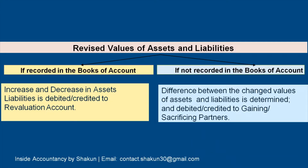When revised values are recorded in the books of accounts, any increase or decrease in assets and liabilities is either debited or credited to the revaluation account, and the gain or profit is transferred to partners' capital account. When revised values are not to be recorded, the difference between the changed values is determined by preparing a statement showing adjustment, and the net effect is debited or credited to the gaining or sacrificing partners via an adjusting entry — gaining partners' capital account DR to sacrificing partners' capital account.